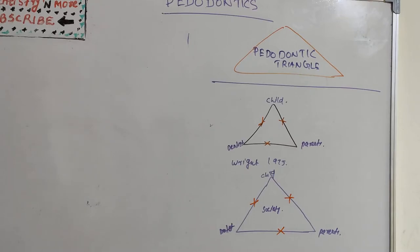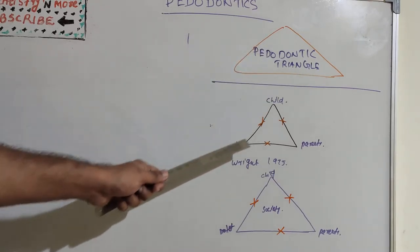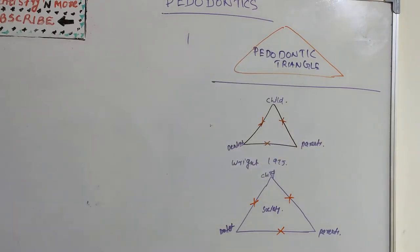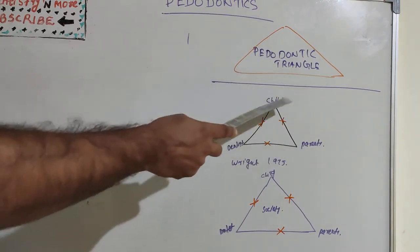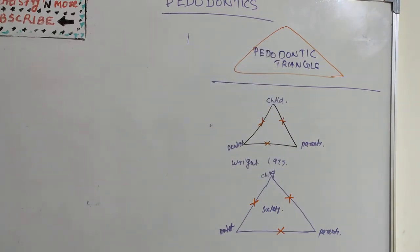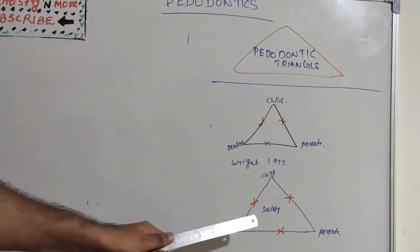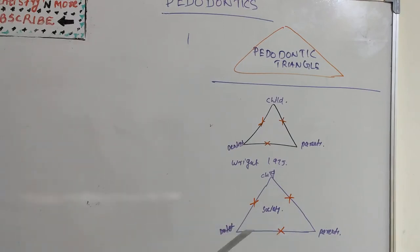Society has a very significant role in child health, child education, and child's attitude. To summarize the pedodontic triangle: the child is at the supreme apex, dentist and parents are at the other ends, and it was later modified to add a society element to the triangle.